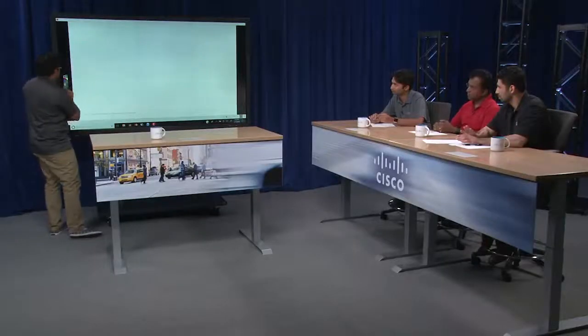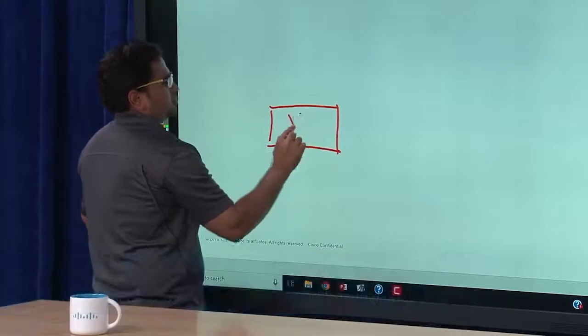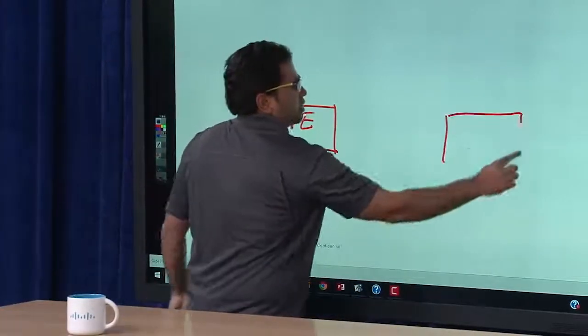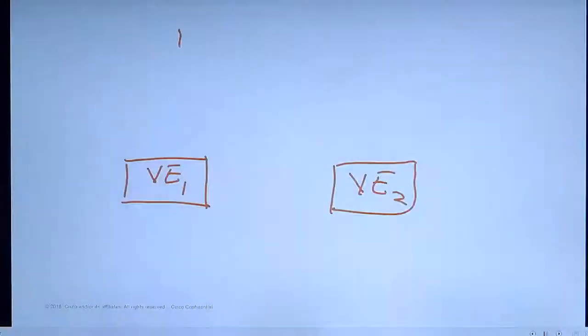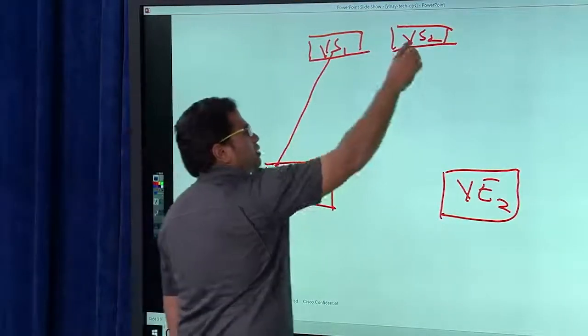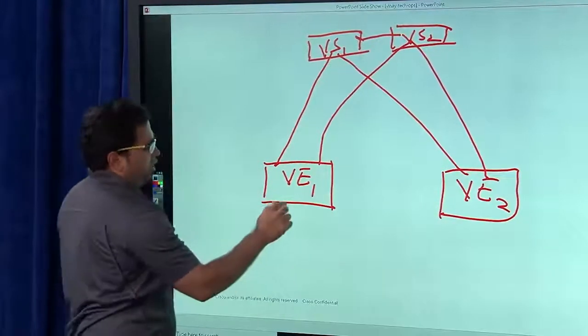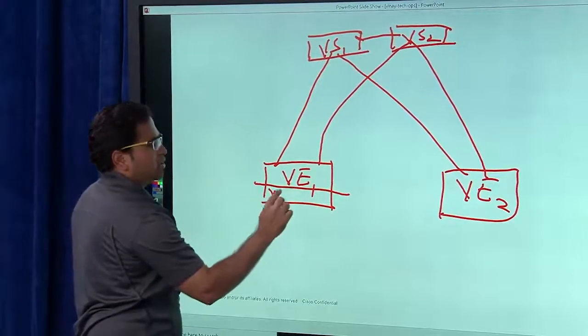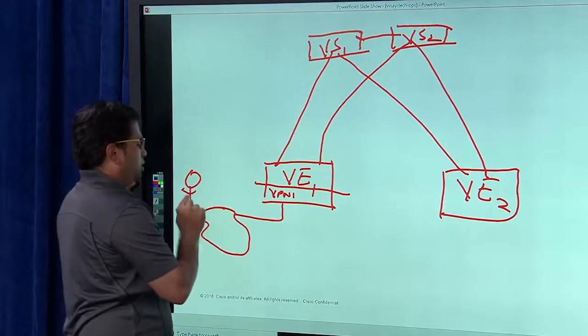So Vinay, why don't you tell us what is OMP? Yeah, let's go there. So what we have here are two edge devices at two different sites. Let's say we have two controllers of V-smarts and we have your LAN segment residing over here behind the edge one with the user one here.